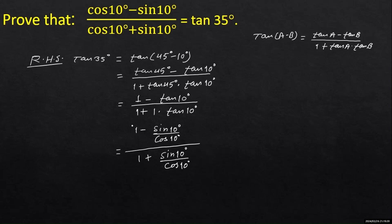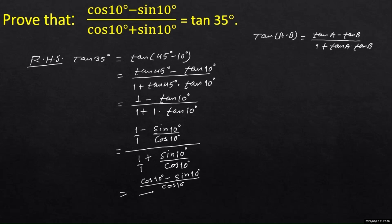Now, either you will write cos(10°) upon cos(10°) in place of 1 in the numerator and also in the denominator, or you can take LCM. The LCM is cos(10°), and after taking LCM, in the numerator we will get cos(10°) minus sine(10°), and in the denominator also cos(10°) will be the LCM, giving cos(10°) plus sin(10°).